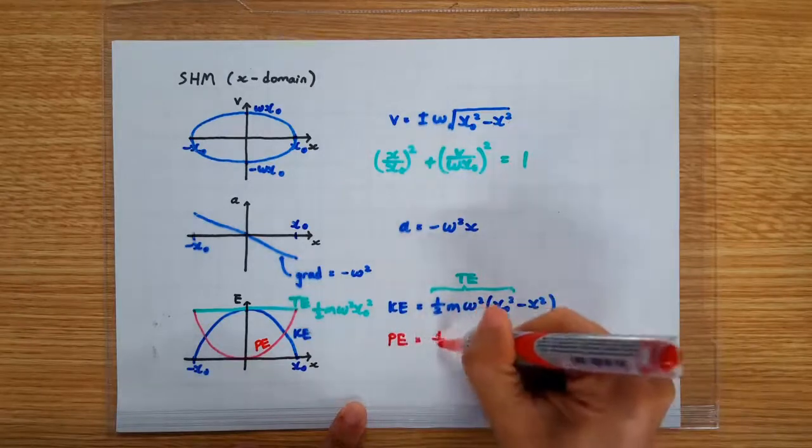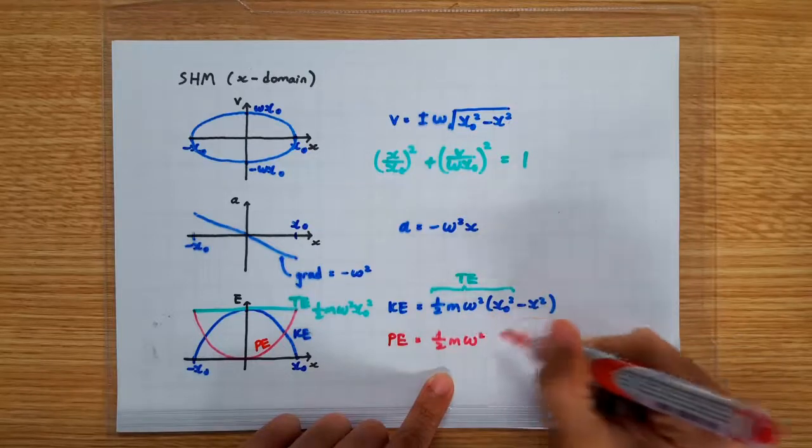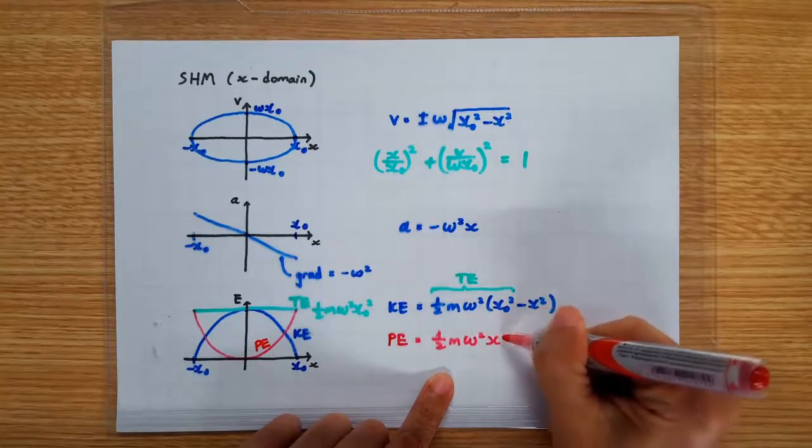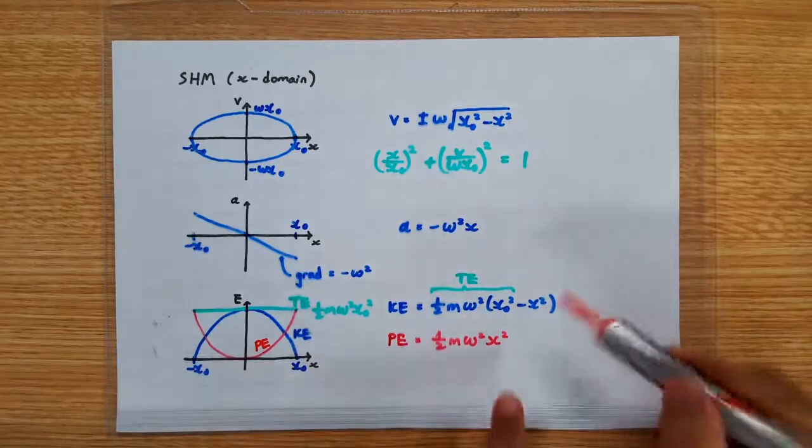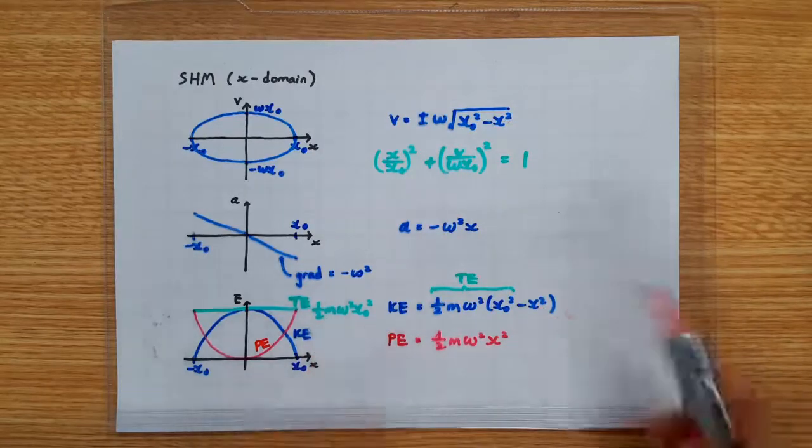And its formula, its equation, is even simpler. It's simply half m omega square x square. Remember the summation of these two should give you half m omega square x0 square.